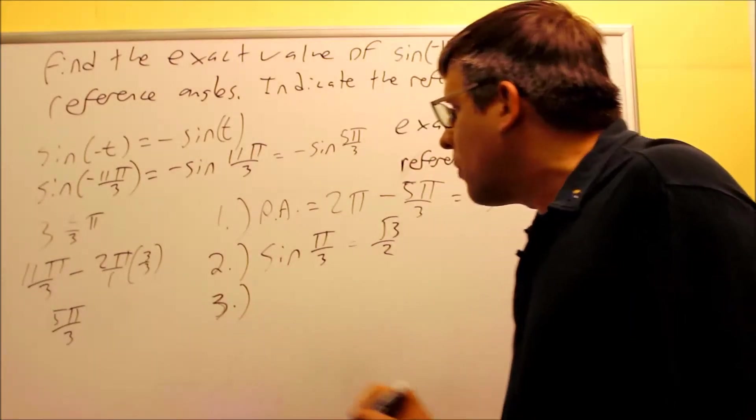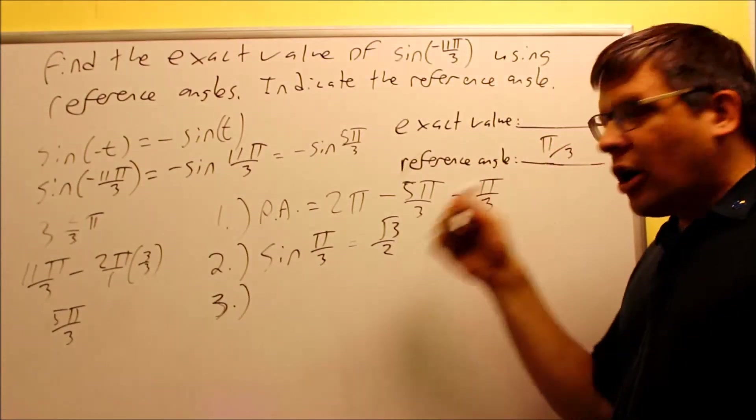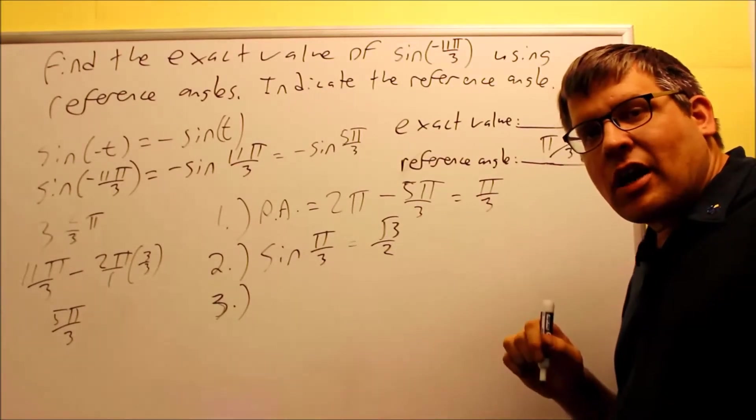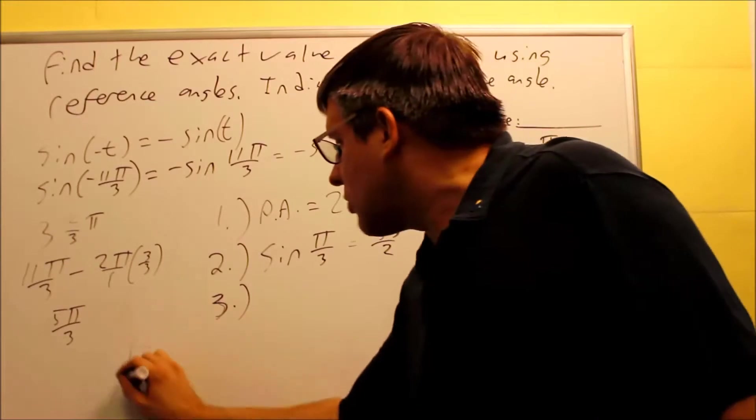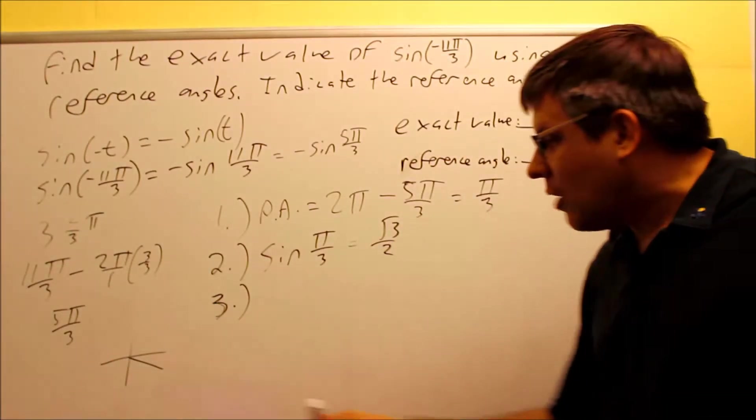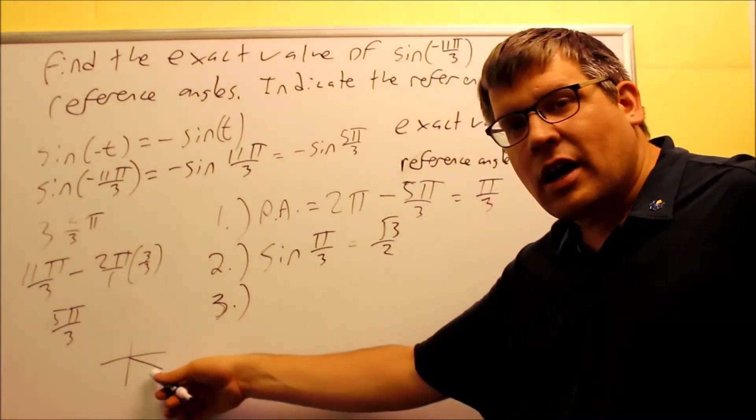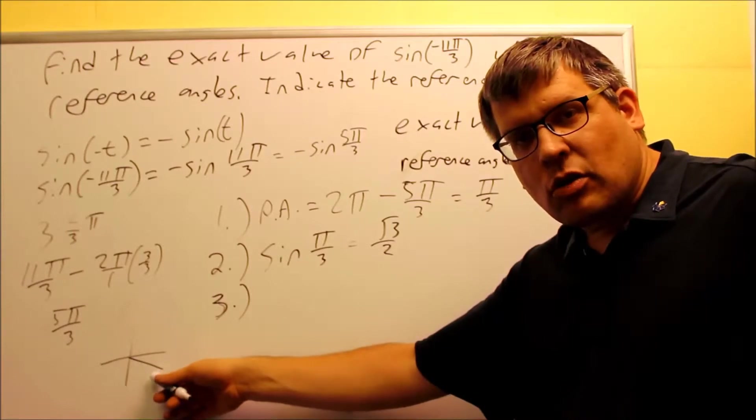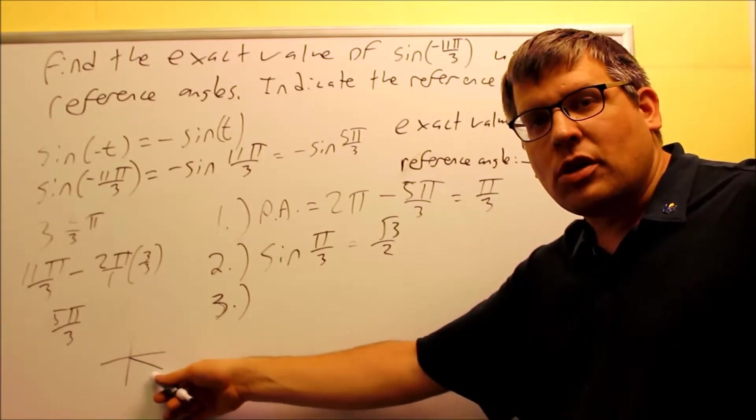Step number 3, I need to apply the appropriate sign. Now, we already mentioned that we're in the fourth quadrant. If you do all students take calculus, if I'm talking about an angle that's drawn somewhere down here, which is what it would look like for this problem, all students take calculus, that means that C in calculus represents cosine. So cosine's positive, everything else is going to be negative.